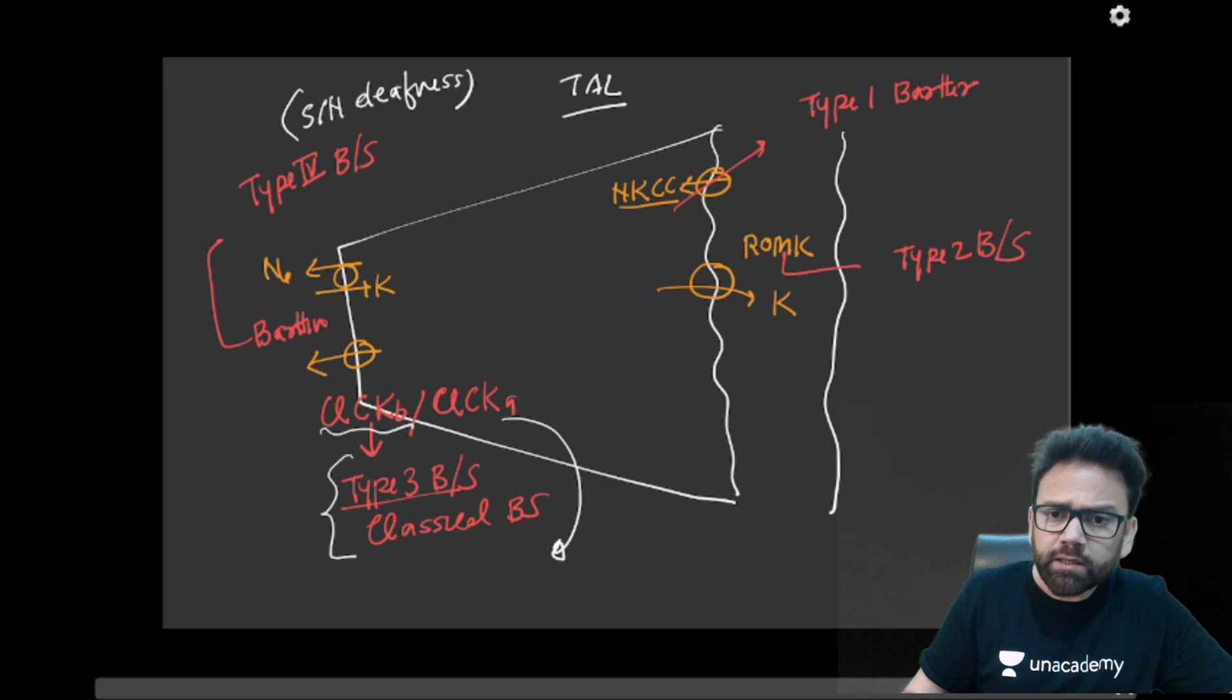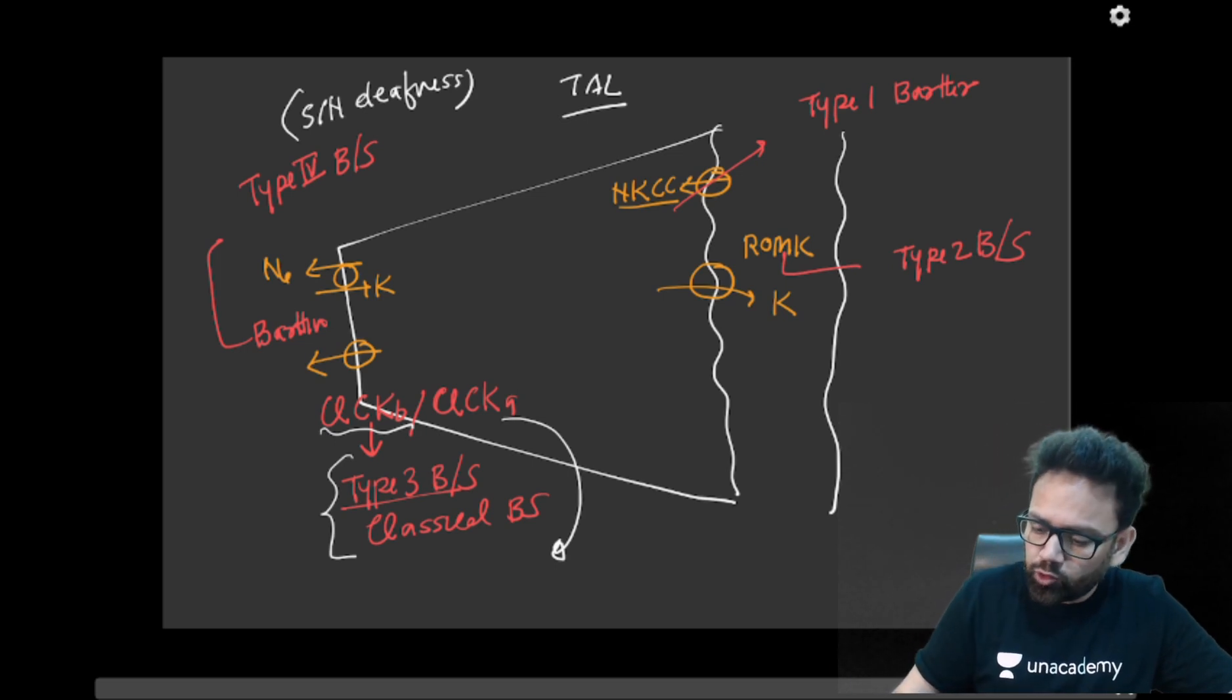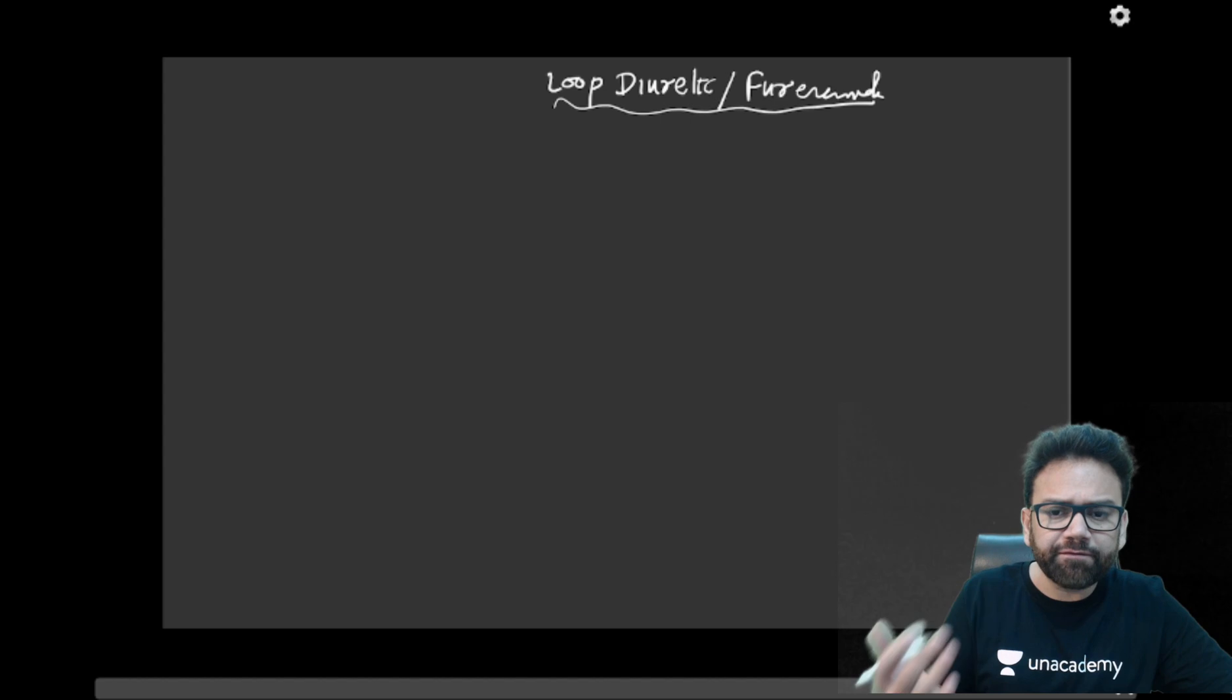Now, the drug which is acting on this pump or blocking this pump is loop diuretics. So loop diuretics like furosemide are behaving like Bartter syndrome. So what can be the feature if you want to discuss?